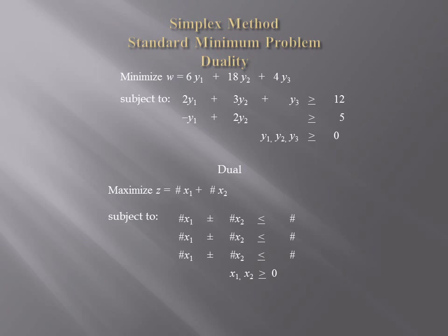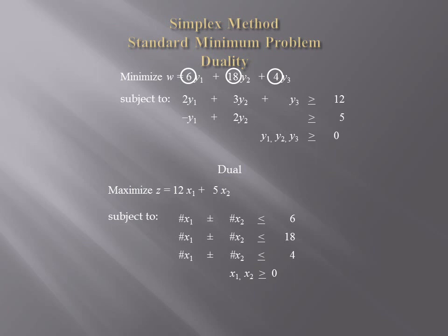Now let's see how to place the numbers into the dual. The numbers 12 and 5 after the inequalities in the minimum problem become the coefficients of x1 and x2 in the z equation. So the dual reads: maximize z equals 12x1 plus 5x2. Next, the coefficients of y1, y2, and y3 in the w equation become the numbers after the inequalities in the dual. The 6, the 18, and the 4 must go in order, reading down, in the dual.